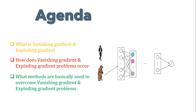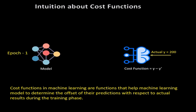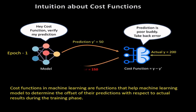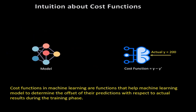So when we train a neural network, we are constantly calculating a cost value, where cost is typically the difference between the predicted value and the actual value. Then the cost is lowered by making slight adjustments to weights and biases over and over throughout the training process, until the lowest possible value.